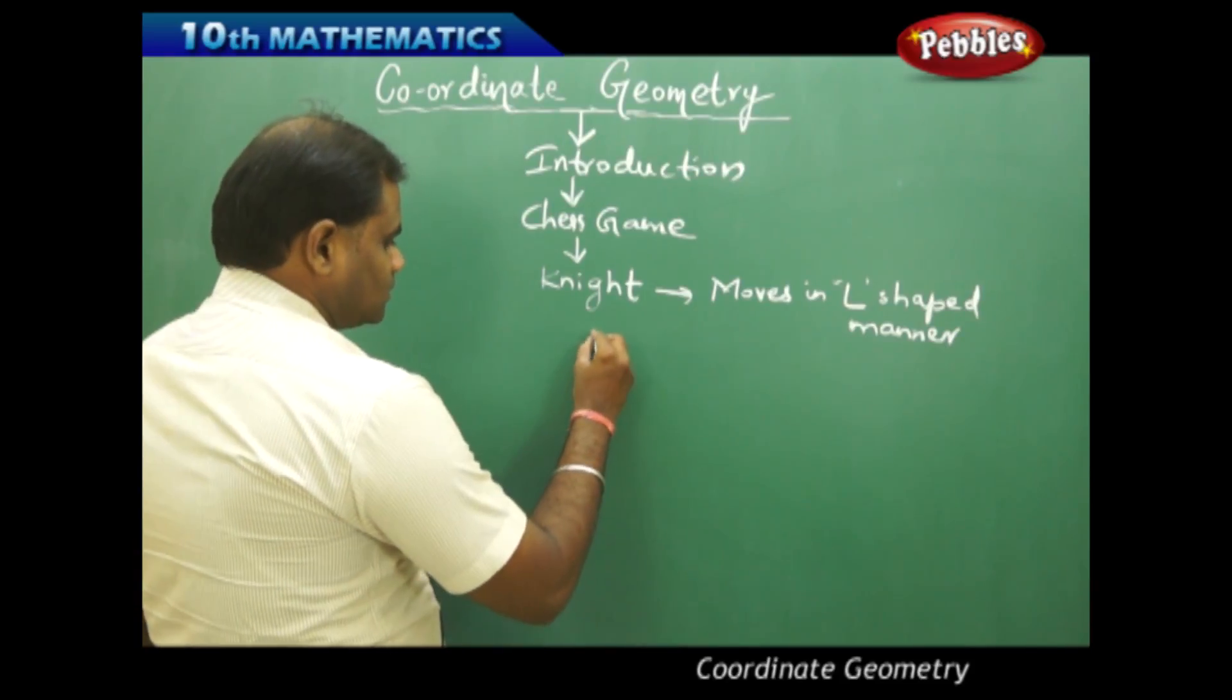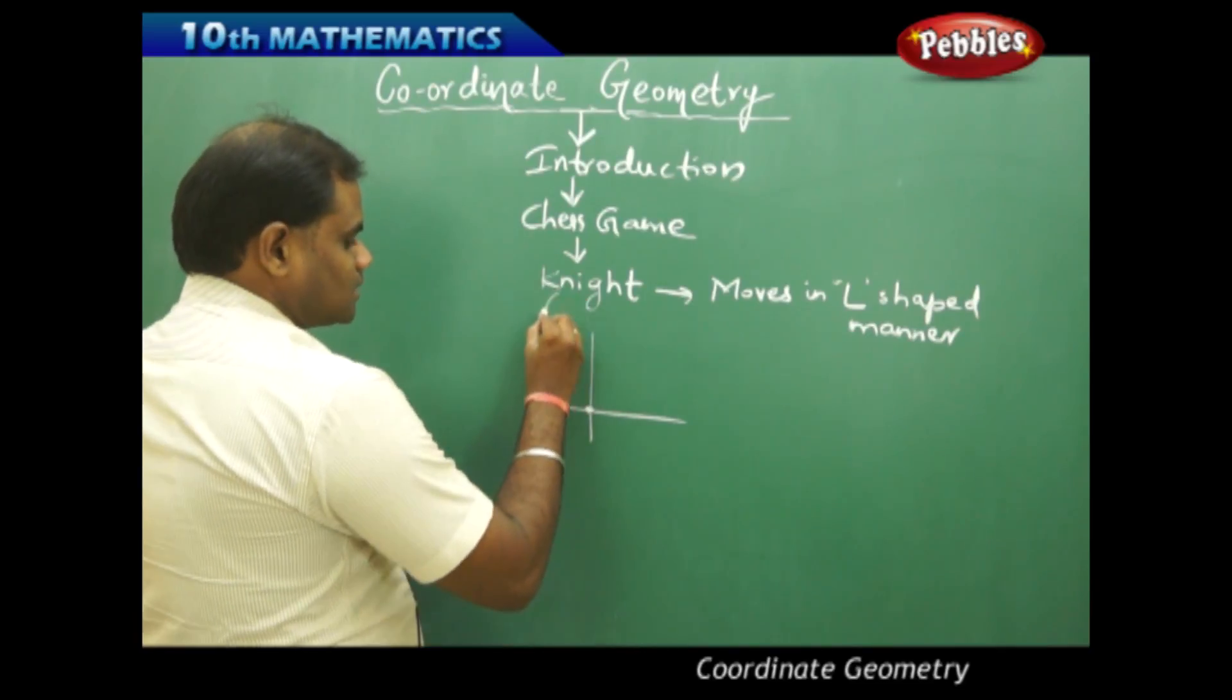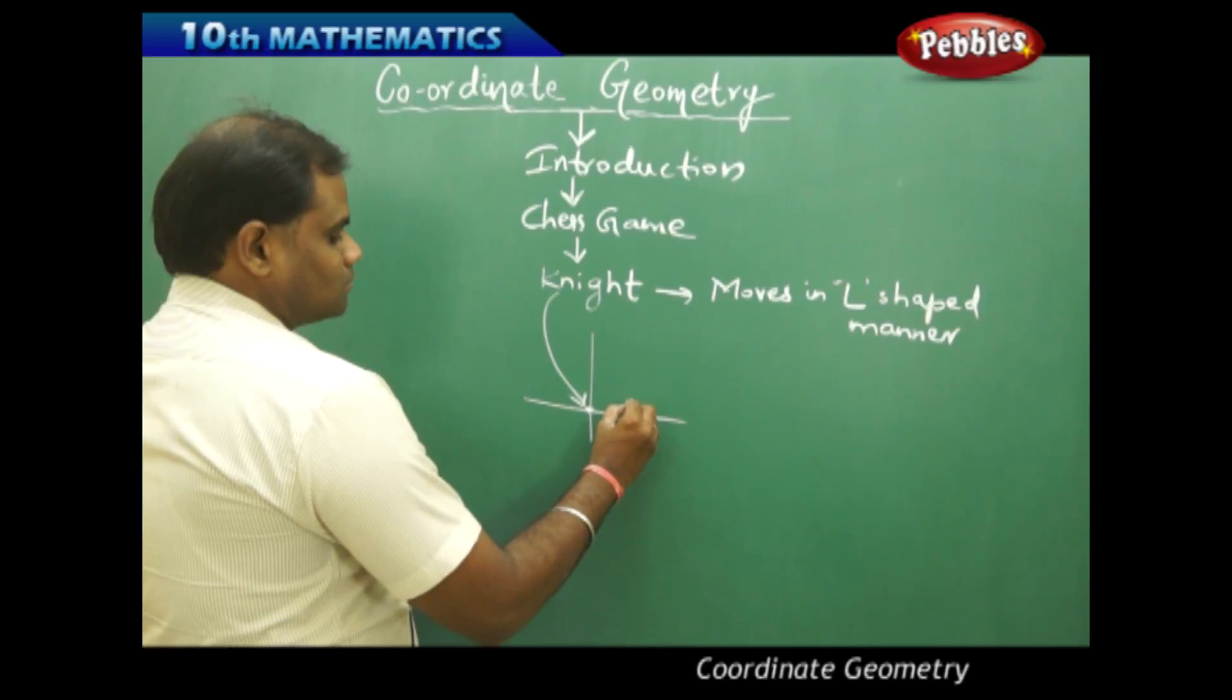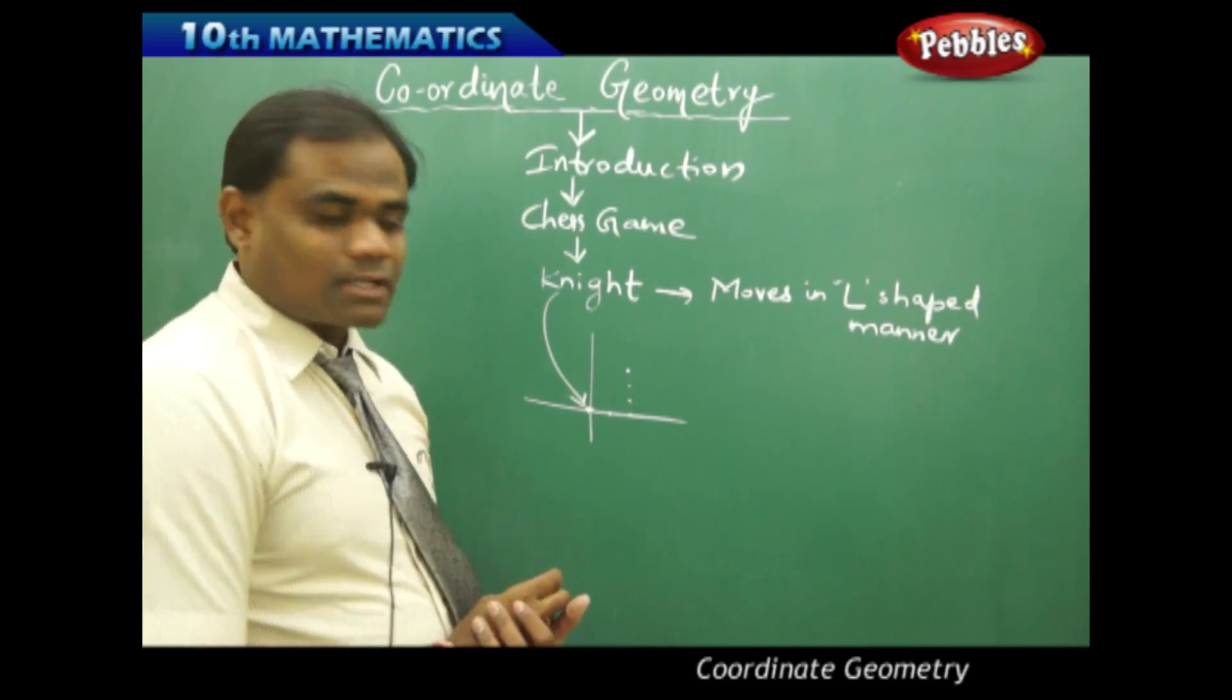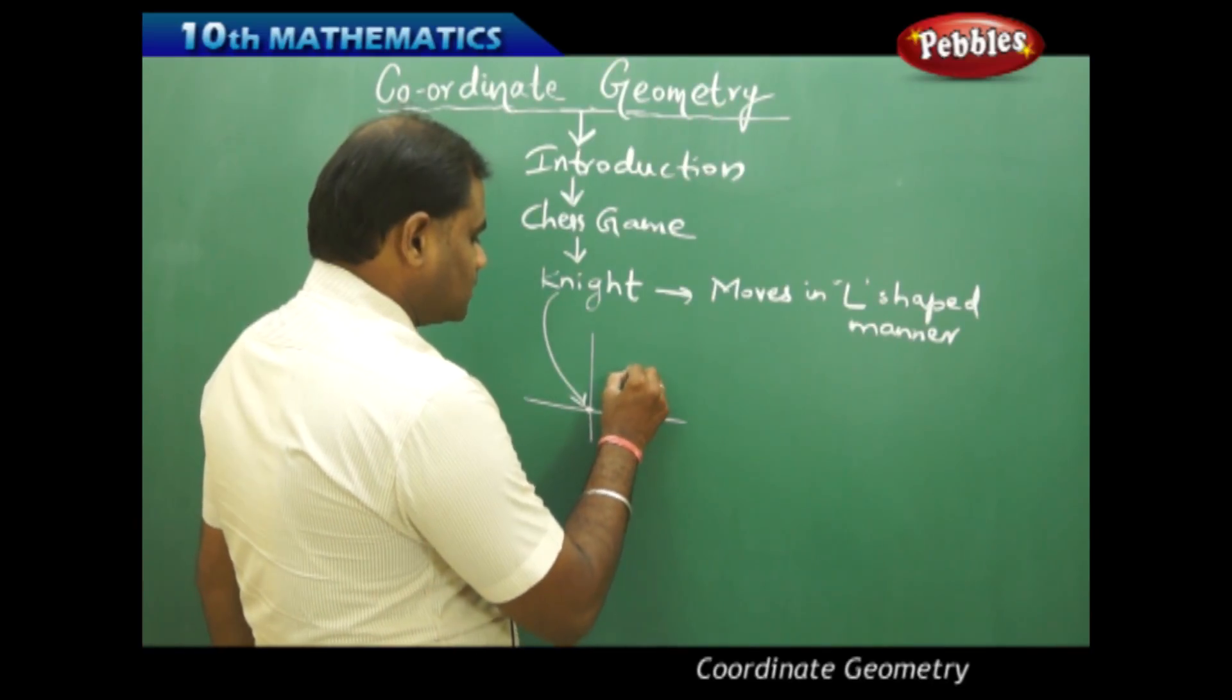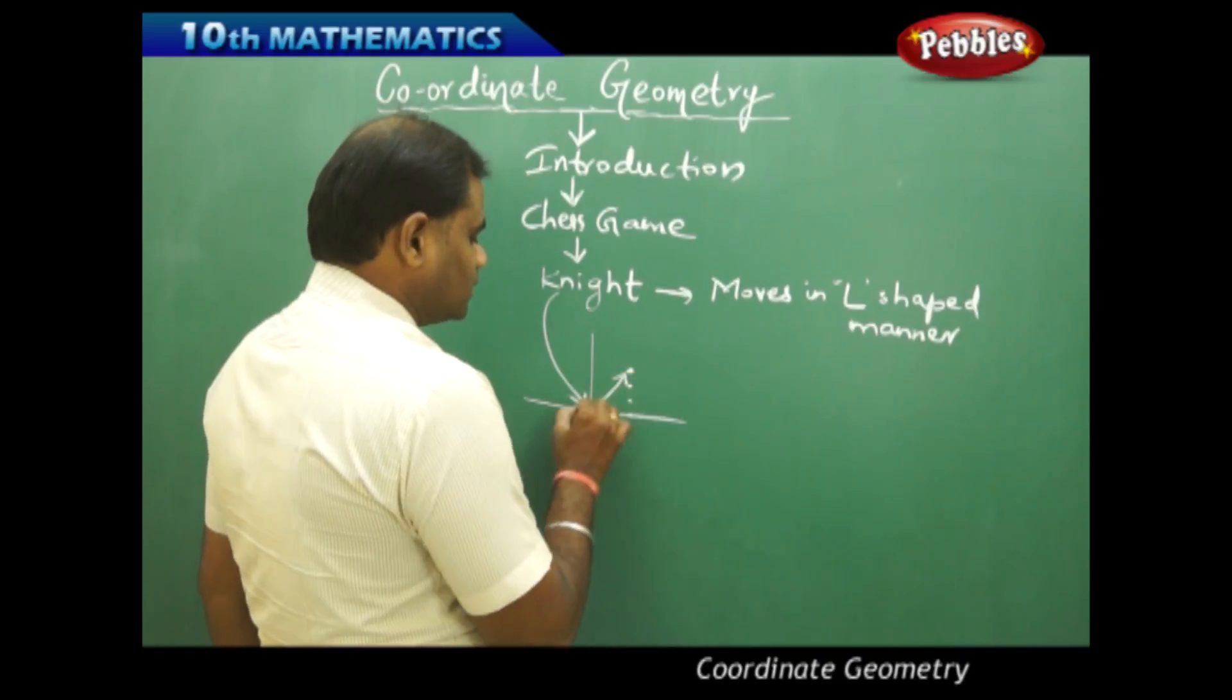Say for example, my knight here is here. So this knight over here moves L-shaped here. That means once I move, I move two steps to the right and three steps up, then this is where this has moved finally in L-shape.